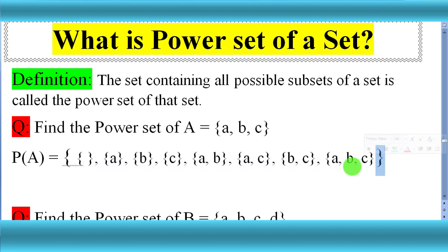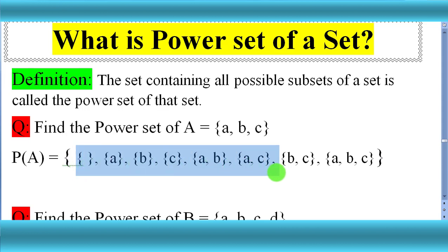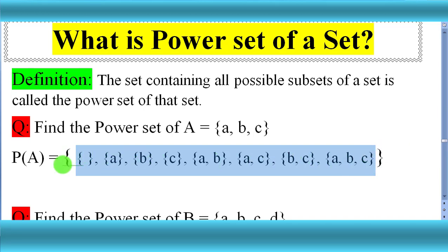Close it with curly brackets. This is called the power set. In subsets we only write the sets, but in power set you have to write all subsets enclosed within a set. So this is called the power set.